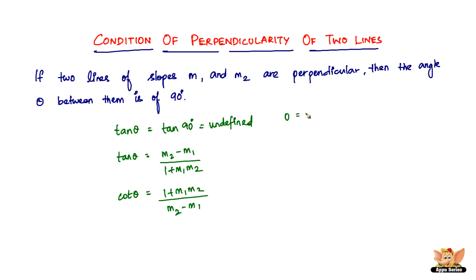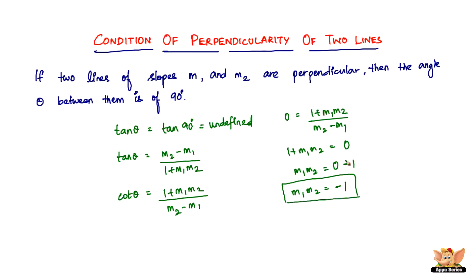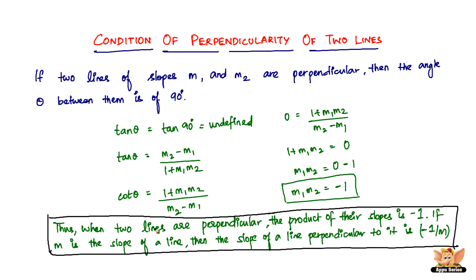So it becomes: 0 equals 1 plus m1·m2 divided by m2 minus m1. From this, 1 plus m1·m2 equals 0 times (m2 minus m1), which equals 0. Therefore m1·m2 equals negative 1. This is the most important result: when two lines are perpendicular, the product of their slopes is negative 1, or if m is the slope of a line, then the slope of a perpendicular line is minus 1 over m.